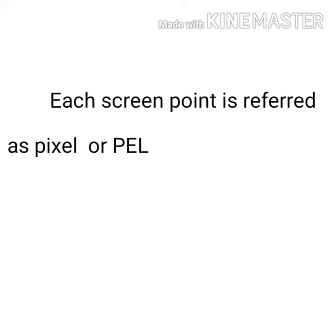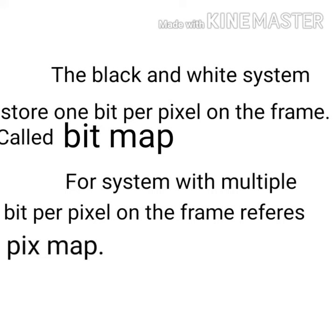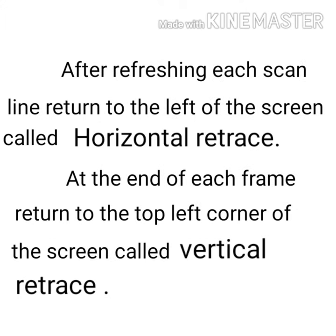Each screen point is referred to as a picture element, or pel, or pixel. In the case of a black and white system, we store values of one bit per pixel on the frame, which is known as a bitmap. Multiple bits per pixel on the frame is referred to as a pixmap. After refreshing each scan line, we return to the left of the screen.